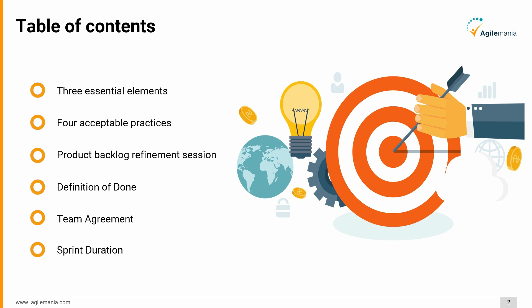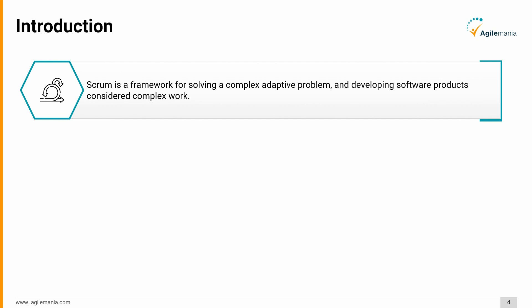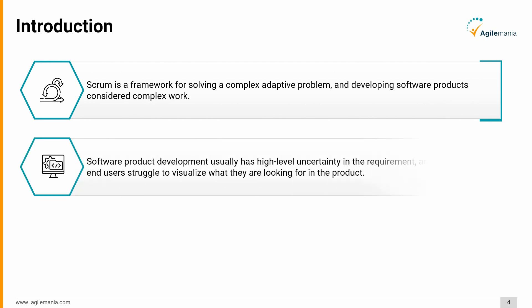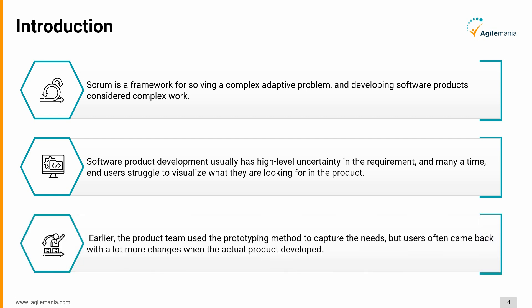Scrum is a framework for solving complex adaptive problems, and developing software products is considered complex work. Software product development usually has high-level uncertainty in requirements, and many times end users struggle to visualize what they are looking for in the product. Earlier, the product team used the prototyping method to capture needs, but users often came back with a lot more changes when the actual product was developed.